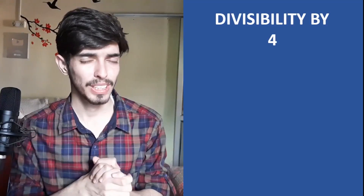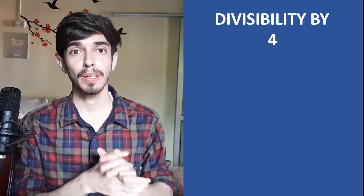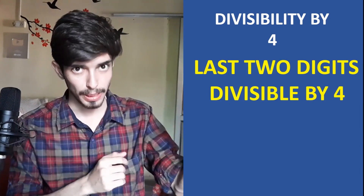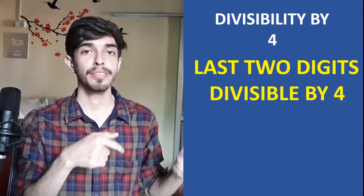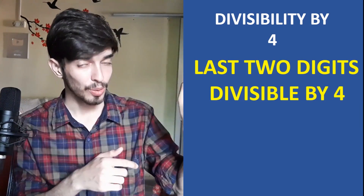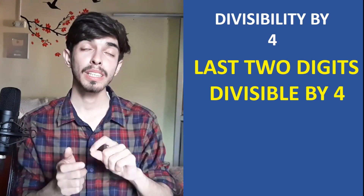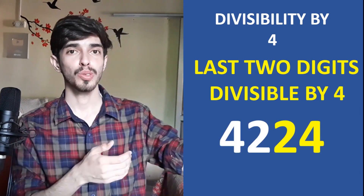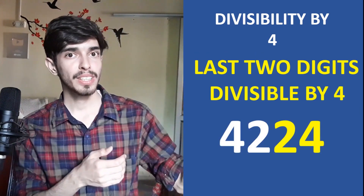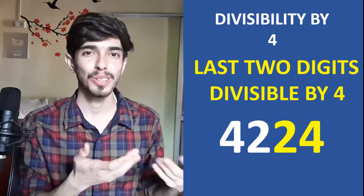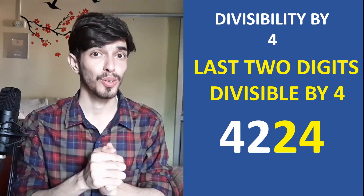The test for 4 is really simple: if the last two digits of a number are divisible by 4, or both are zero, then that number is also divisible by 4. For example, 4224 — the last two digits are 24, and 24 is divisible by 4, so 4224 is also divisible by 4.